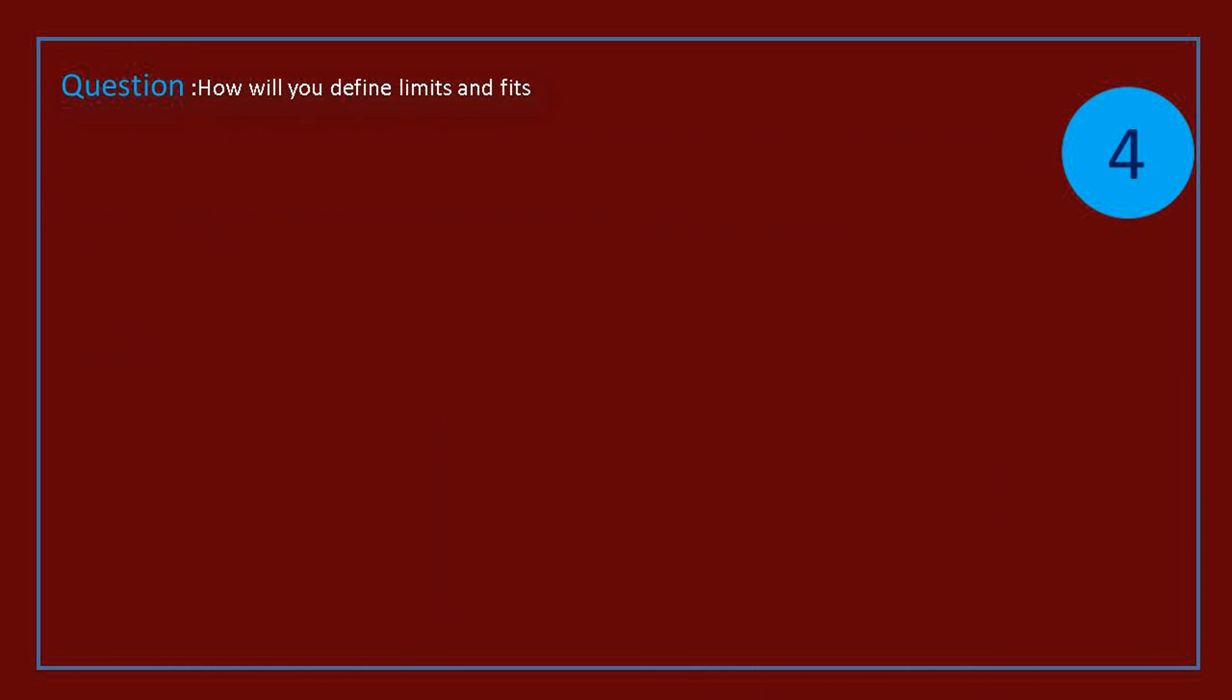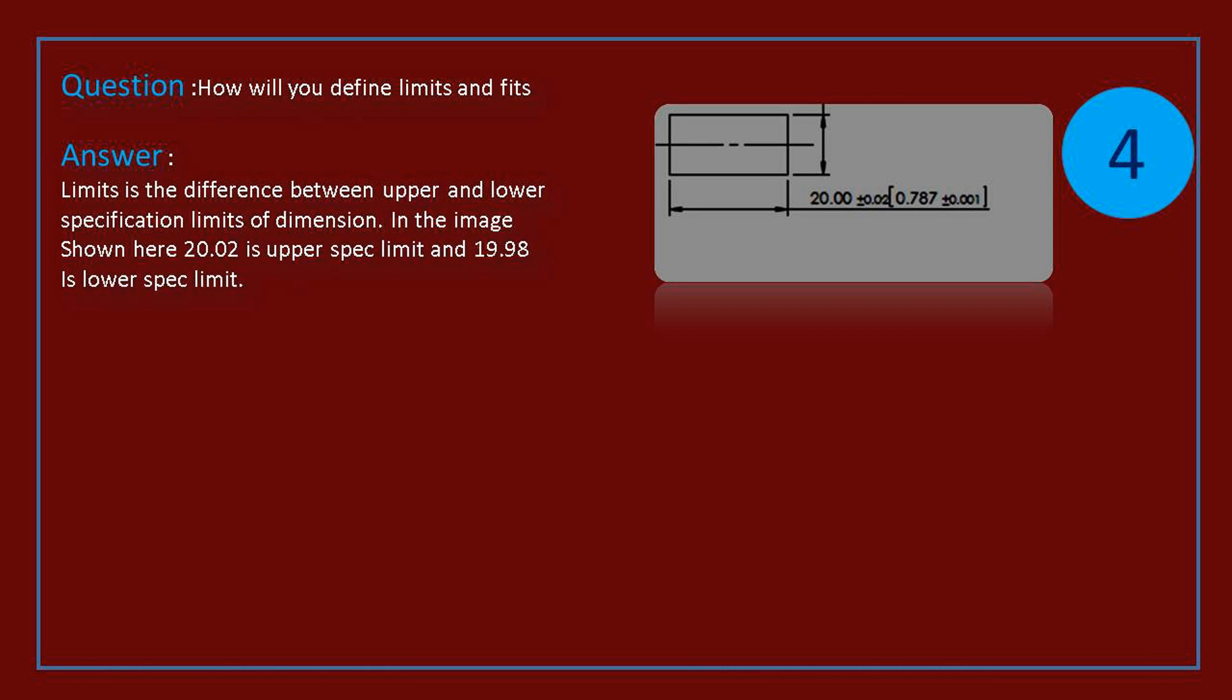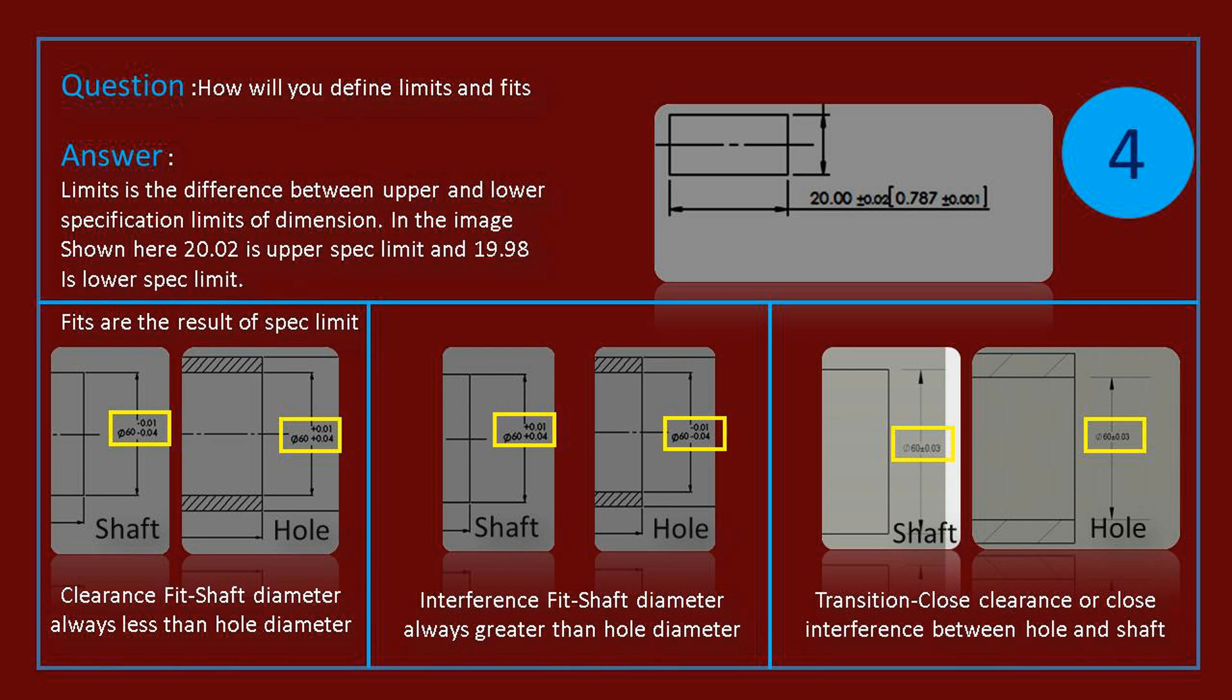Question: how will you define limits and fits? Answer: limits is the difference between upper and lower specification limits of dimension. In the image shown here, 20.02 is upper spec limit and 19.98 is lower spec limit. And fits are the result of spec limit.